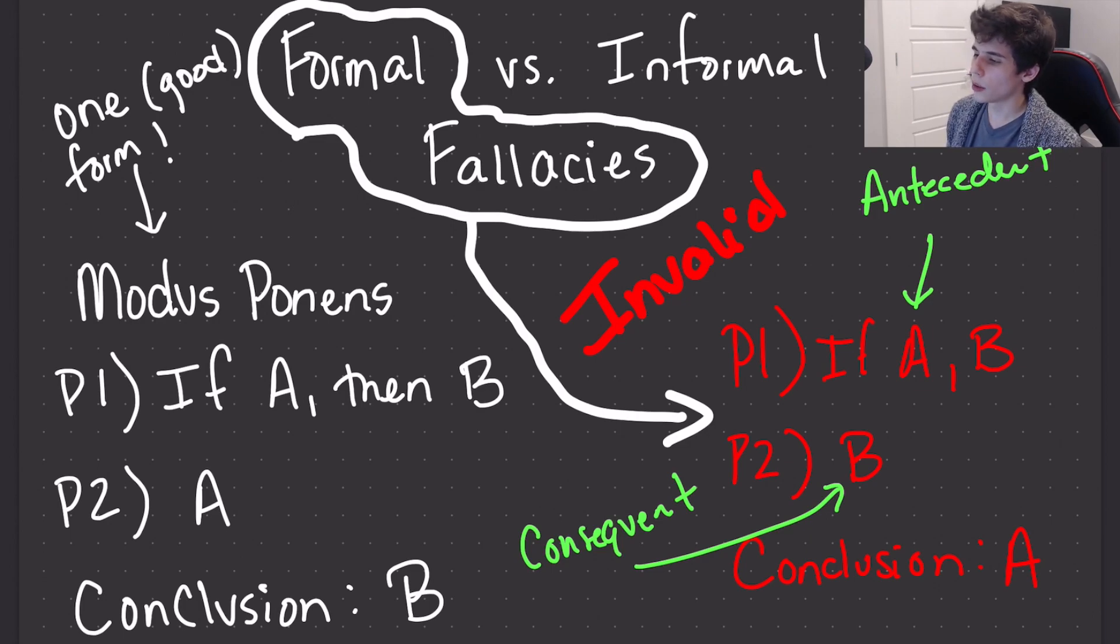So, but notice we can accept the premises, right? We could accept that if some object was a plane, it would have wings. And we could accept that the object we're looking at has wings. But it doesn't logically get us from those two propositions or those two premises. It doesn't logically get us to A, that therefore it's a plane if it has wings.